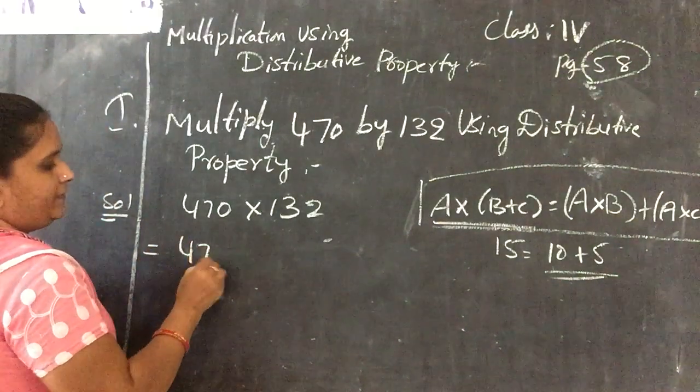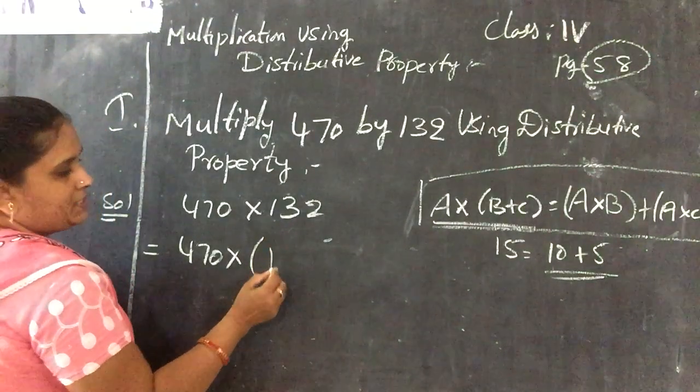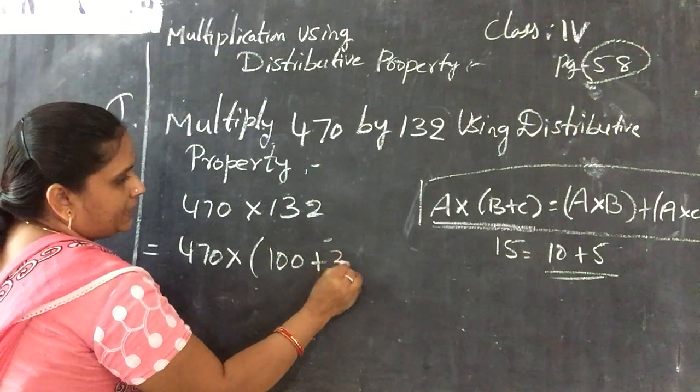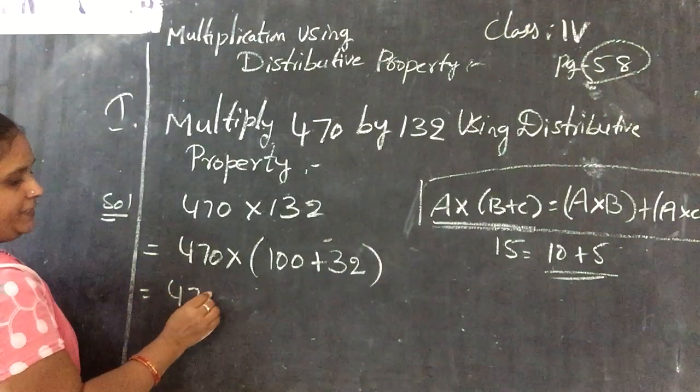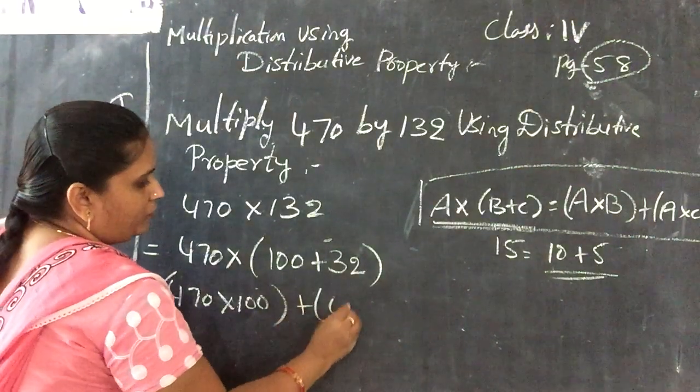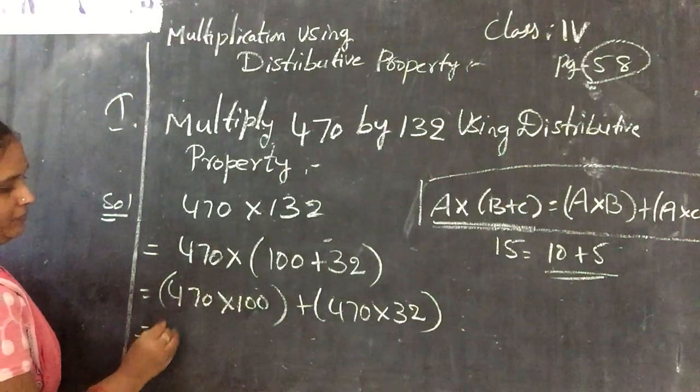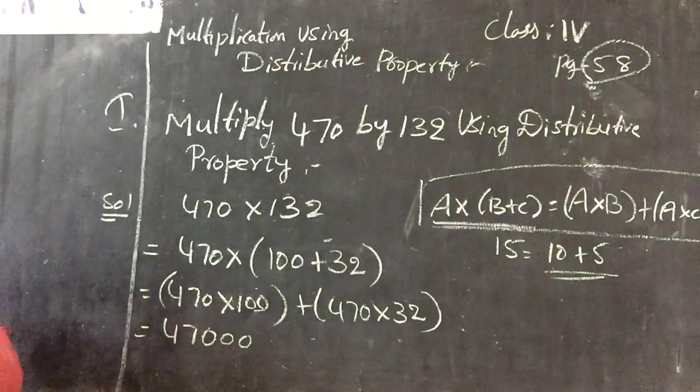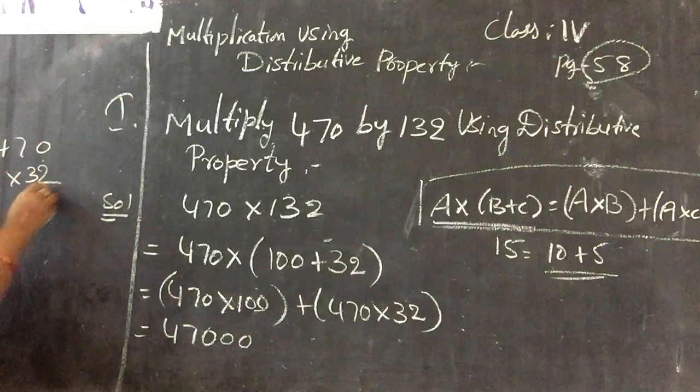First what you are going to do, 470 as you said, this will be considered how much? 100 plus 32. Now 470 into 100 plus 470 into 32. Here it will be 470, after again 2 zeros will be continued. Now 470 into 32.